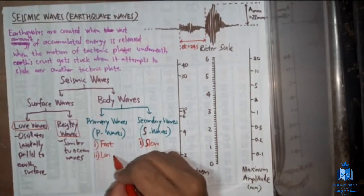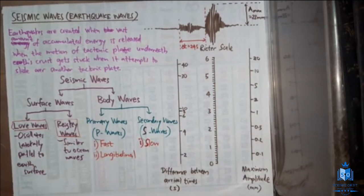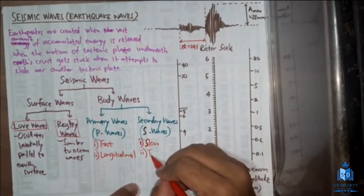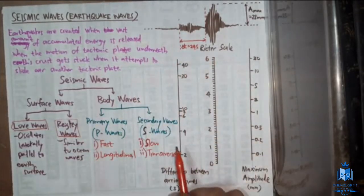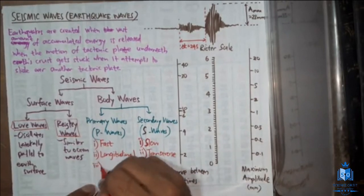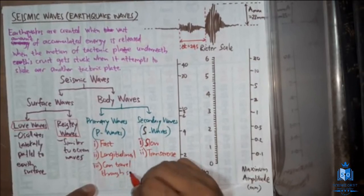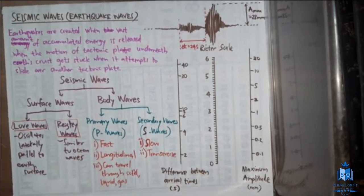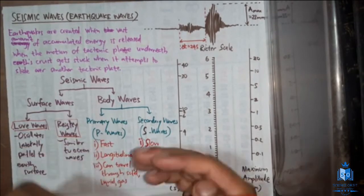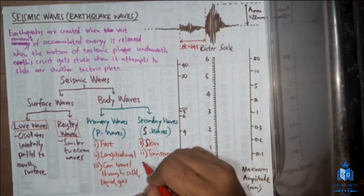Primary waves (P waves) are longitudinal waves — they compress and expand as they move. Secondary waves (S waves) are transverse waves. You can remember this using the shape of the letter S, which looks like an inverted transverse wave. Primary waves can travel through all three media: solid, liquid, and gas — even through semi-solids like lava underneath the ground.